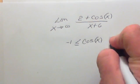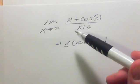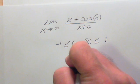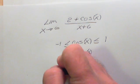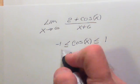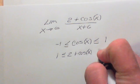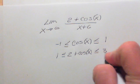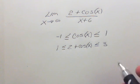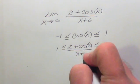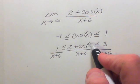Now we're going to start adding things back in. We need to add two, so if I add two to give (2 plus cosine x), I must also add two to both sides. So 2 plus cosine of x is greater than or equal to one and less than or equal to three. Now I want to divide everything by (x plus 6) — I divide the middle and both sides by (x plus 6). Now I have exactly what I wanted in the middle.